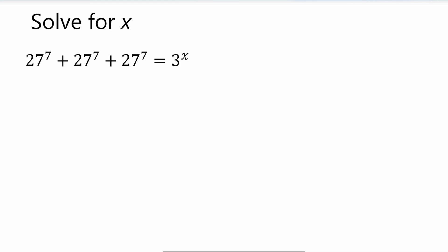So this 27 to the 7th is here in the expression. It's there for a total of 3 times. So if it shows up 3 times the same term, we could use multiplication. So let's just do 3 times 27 to the 7. So 3 times 27 to the 7 is equal to 3 to the power of x. So that's what we have now.